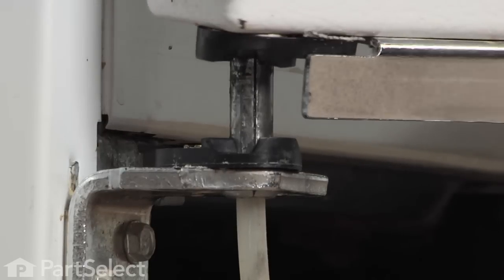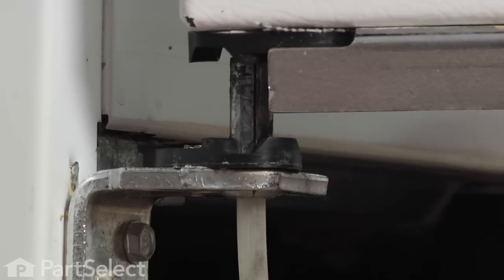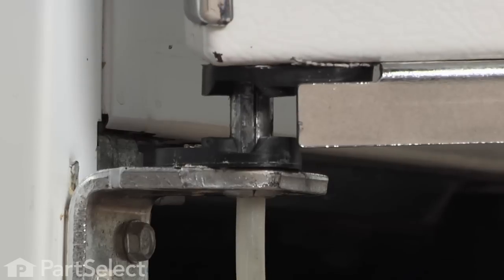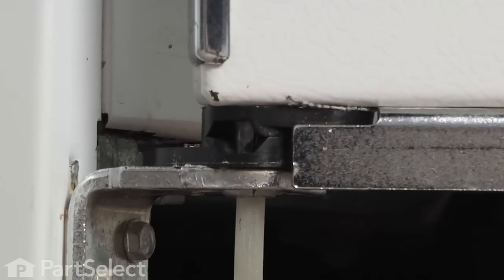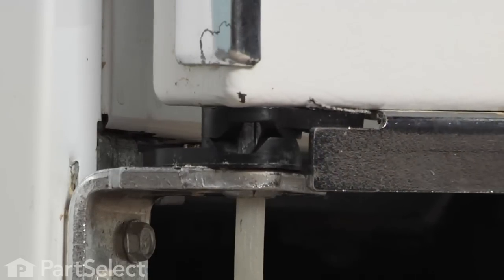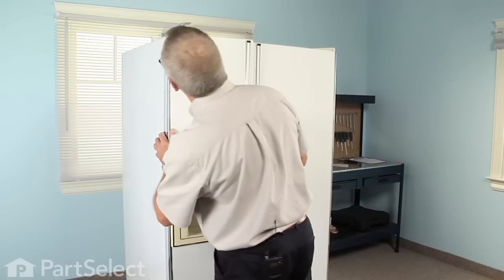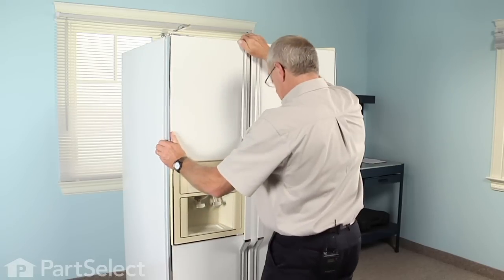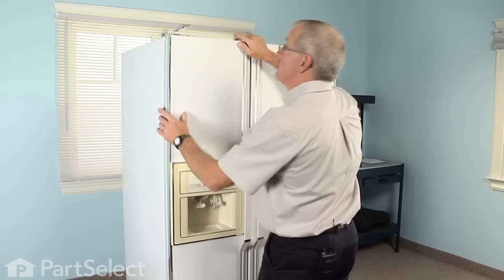Now carefully, so that it doesn't kink, line the hinge pin up, set the door down in place. Let the gasket hold it steady until we're ready to put the top hinge on.